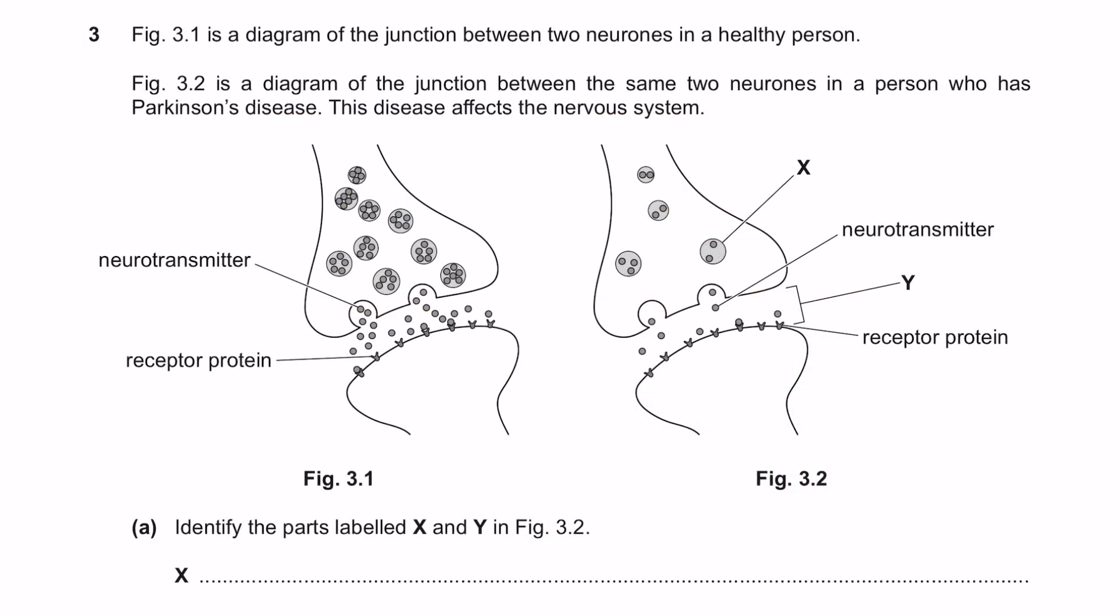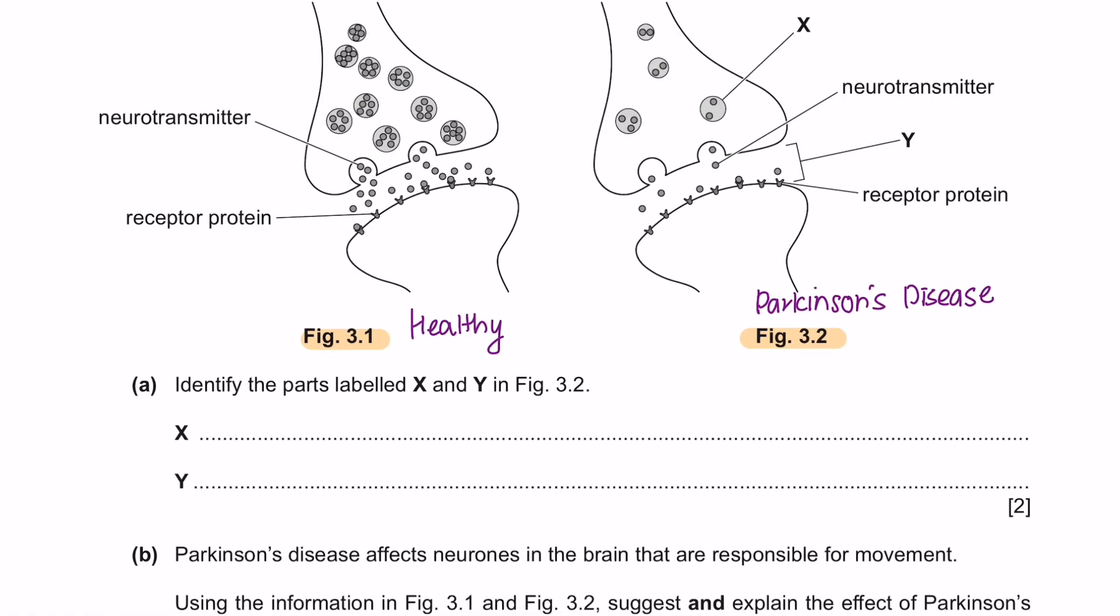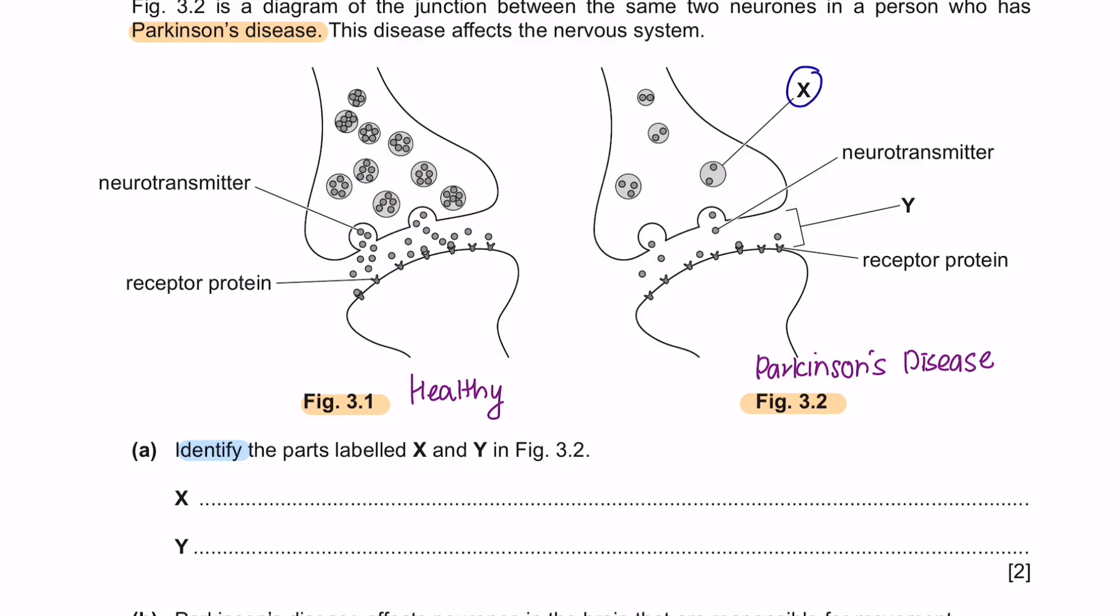Question 3. Figure 3.1 is a diagram of the junction between two neurons in a healthy person. And figure 3.2 is a diagram of the junction between the same two neurons in a person who has Parkinson's disease. This disease affects the nervous system. Question A. Identify the parts labeled X and Y in figure 3.2. X here are little bags that carry the neurotransmitter and these bags are called vesicles. And Y here is pointing to the gap between the presynaptic membrane and the postsynaptic membrane, which is known as the synaptic gap.